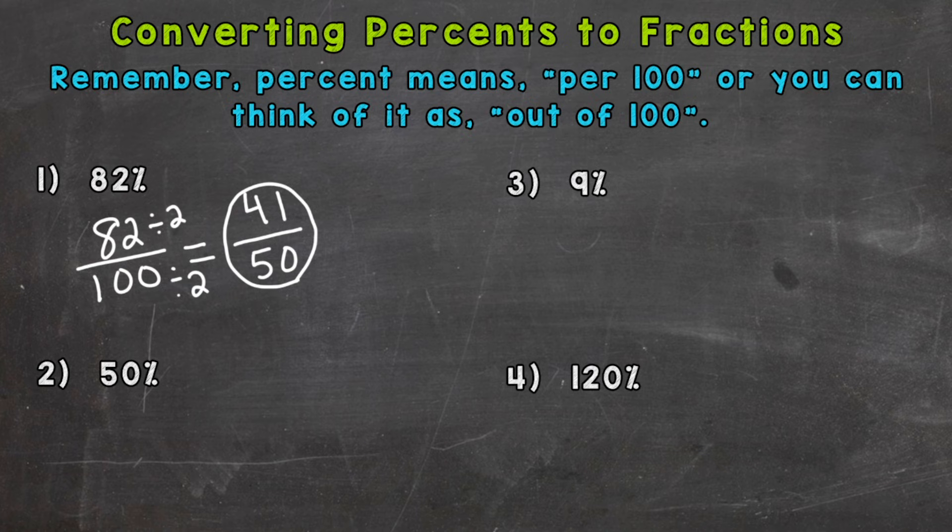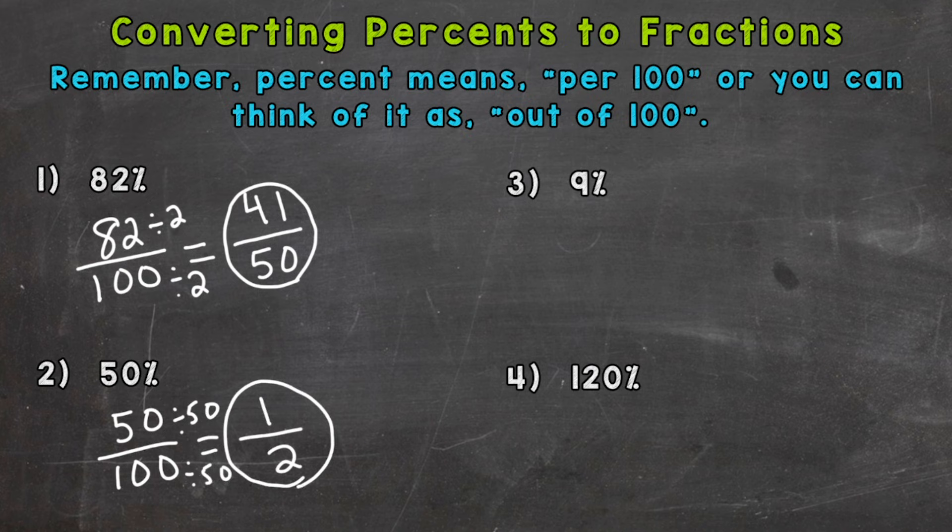Number 2, 50 percent. 50 out of 100. And we can simplify this one. The greatest common factor between 50 and 100 is 50. We can divide both by 50. And 50 over 100 equals a half. So 50 percent is one half.